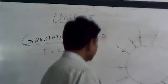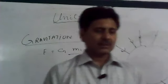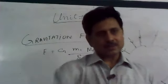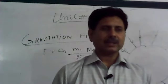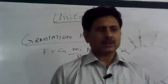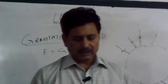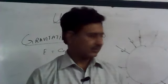If you take one unit of mass — one kilogram — the force applied on it gives the gravitational field strength. The gravitational field strength is the force per unit mass acting in that region.